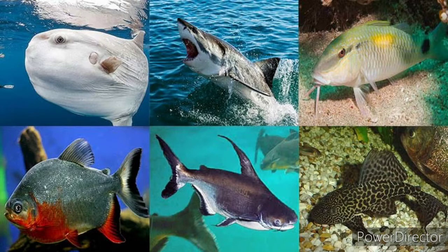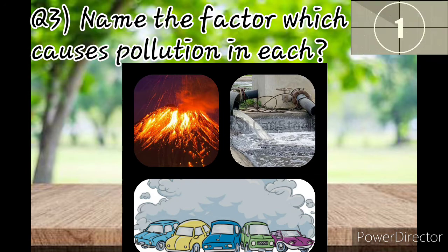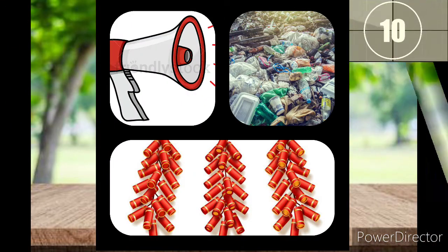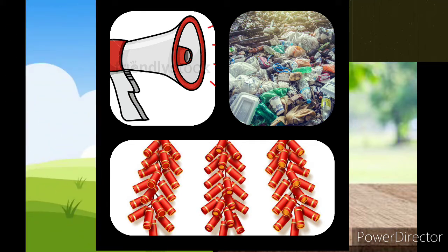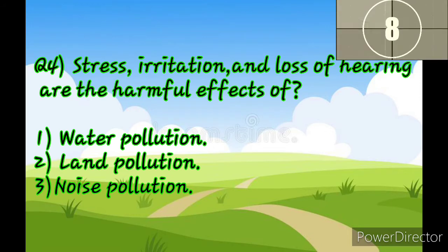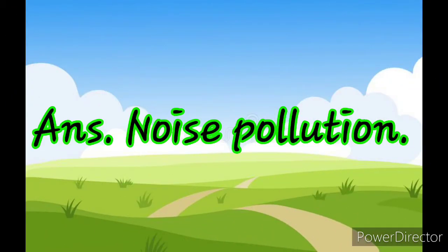Now the next question: name the factor which causes pollution in each image shown. Time up. For the next set, children, you have to guess the answer and send your answers to your teachers — answers will not be given for this one. Next: stress, irritation, and loss of hearing are the harmful effects of which pollution? Yes — noise pollution.